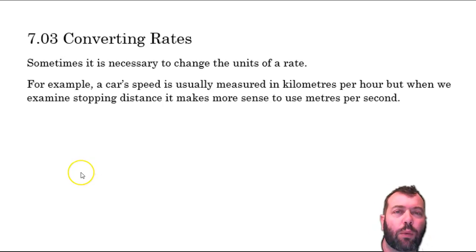So for example, when we're talking about driving we normally describe the speed of a car in kilometres per hour because we're normally travelling so many kilometres in so many hours.